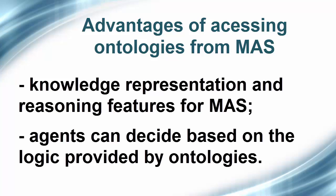Which are the advantages we expect to obtain by allowing ontologies to be accessed from multi-agent systems? First, they provide knowledge representation and reasoning features for multi-agent systems. Second, agents can decide based on the logic provided by ontologies. Using ontologies in multi-agent systems results in the possibility of creating logical rules that can be applied by a semantic reasoner to infer new knowledge. Thus, the logic is moved from the agent code to the ontology, and the knowledge may be reused by different applications.